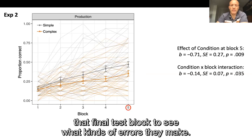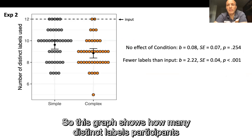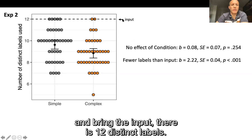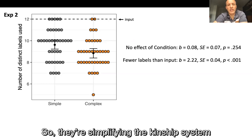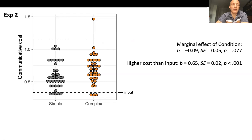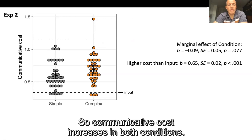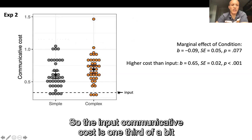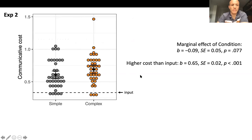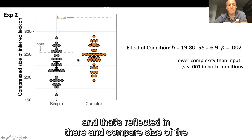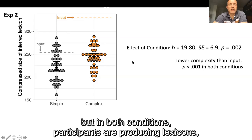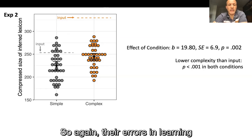Looking at participants' responses in the final test block, in both conditions participants produce fewer distinct labels than the 12 in the input — simplifying the kinship system by dropping labels. As a result, communicative cost increases in both conditions: the input communicative cost was one third of a bit, but participants' errors increase it. Looking at the compressed size of inferred lexicons, in both conditions participants produce lexicons with simpler lexical semantics. So errors in learning tend to reduce complexity while increasing communicative cost.